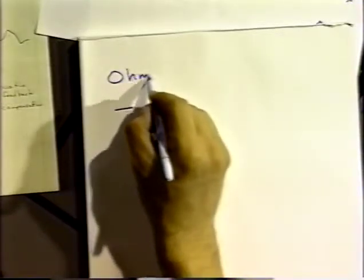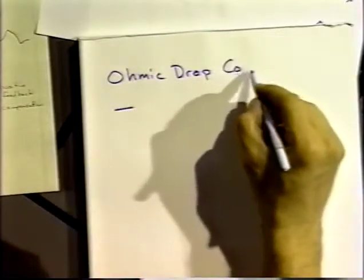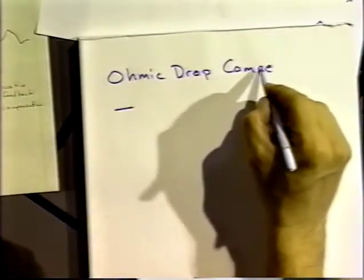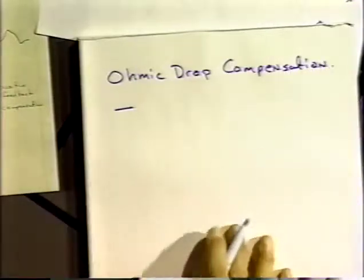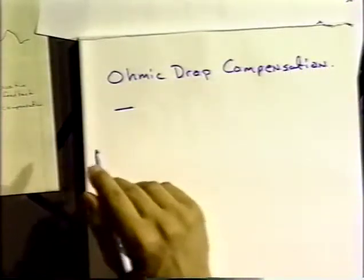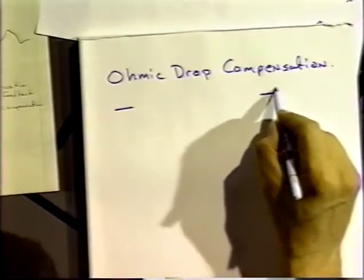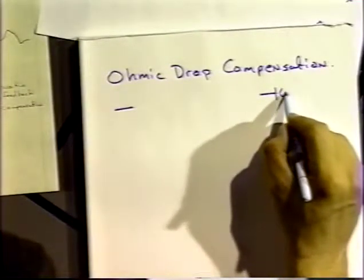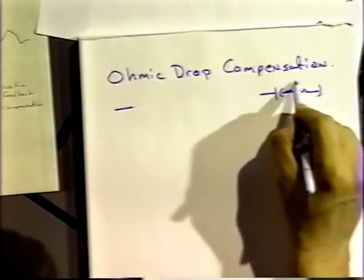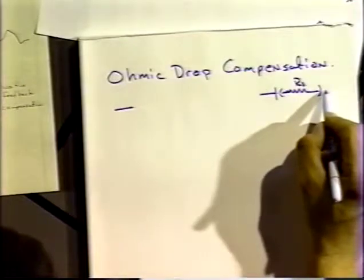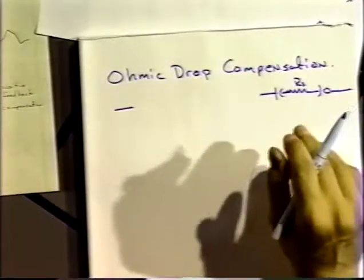That's what they call ohmic drop compensation. You'll have to write this down because you won't get it in the notes. Let's think of what happens when we have an electrochemical cell with just an auxiliary electrode and a working electrode. The resistance of the solution is like a resistor in between those two points.